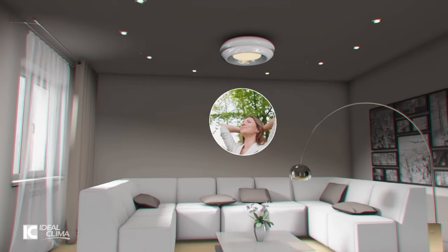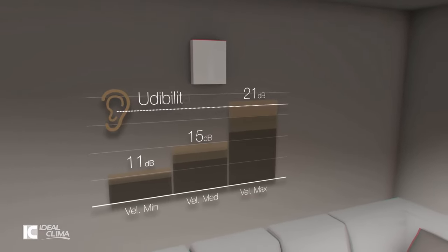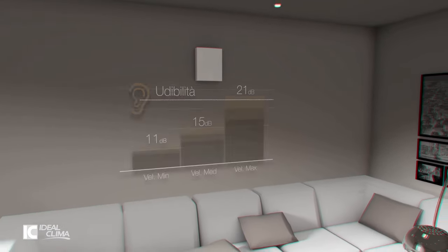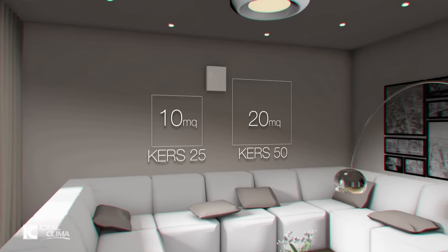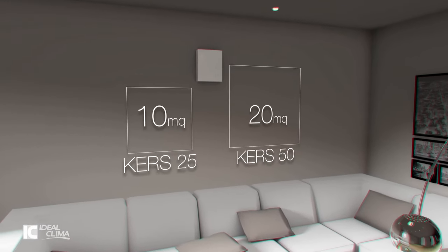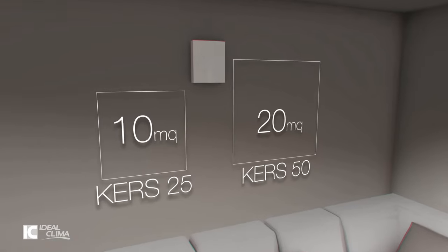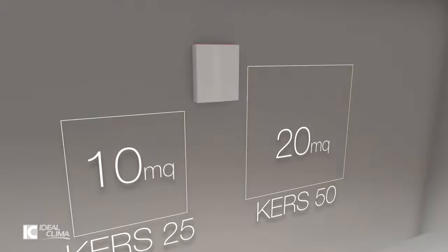KERS has excellent acoustic performance, reducing noise from outside, and the energy consumption is less than an LED bulb. KERS comes in two sizes and can be installed completely from inside without the need for any scaffolding on high buildings.